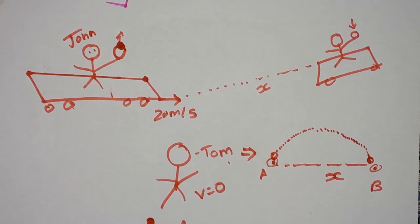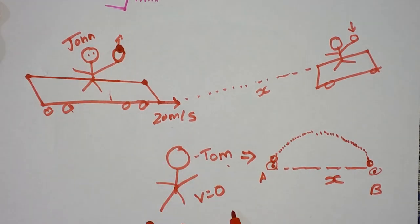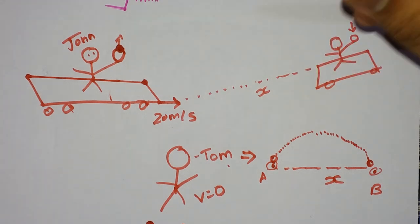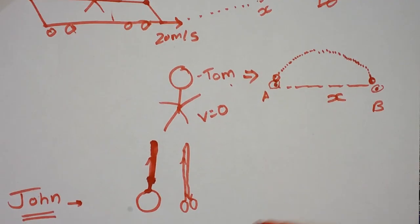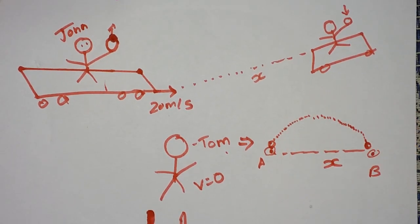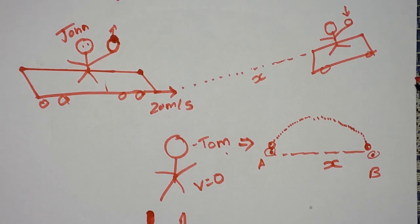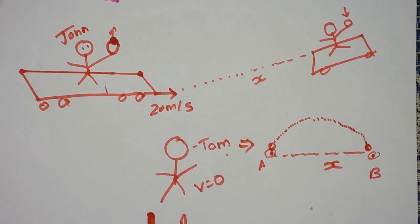So what did we just learn? Simultaneity in events means when two objects are not relative to each other, they witness the same event differently. Since John and Tom are not relative to each other, the event being the ball thrown up: John sees the ball going up and down in one-dimensional motion, but Tom sees the same thing in two-dimensional motion - projectile motion. This is simultaneity in events, the next part of the theory of relativity.